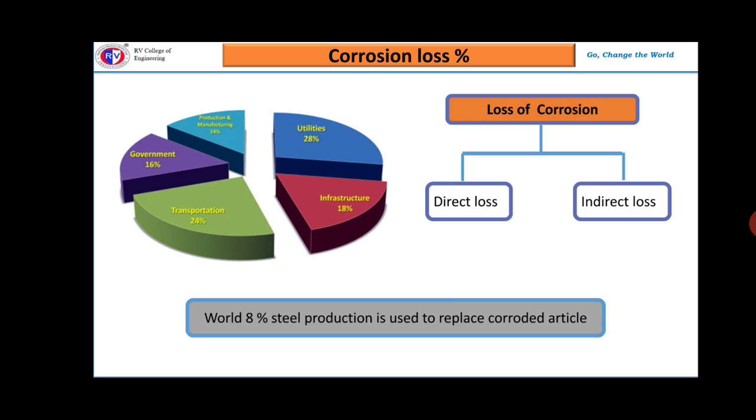Appearance-wise, rusted painted automobiles are not pleasing to the eye and lead to poor impression for the observer, resulting in loss of selling value of an article or automobile. These factors make us as engineers understand the mechanism of corrosion.